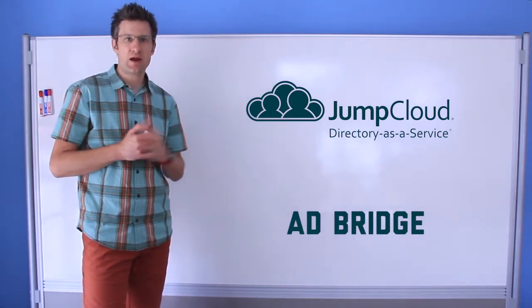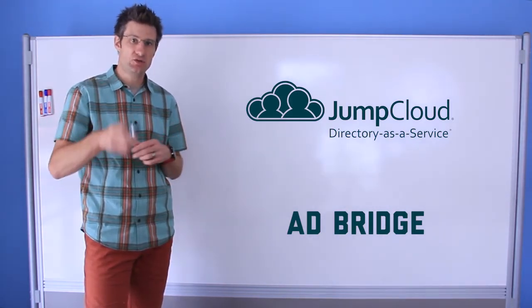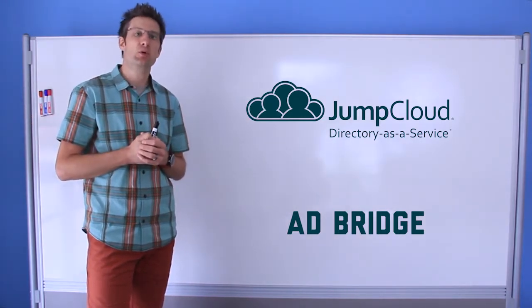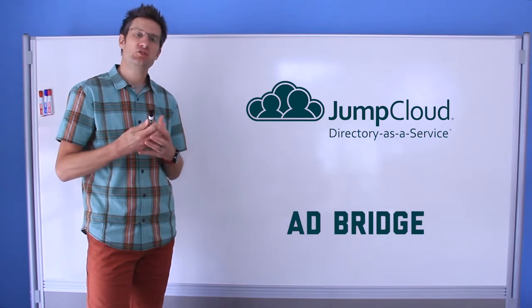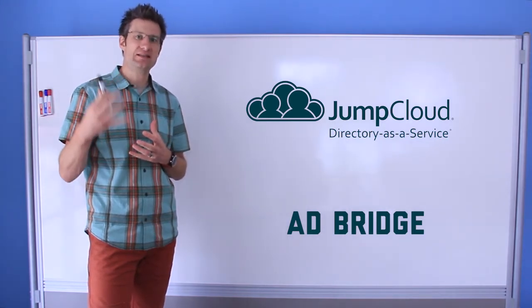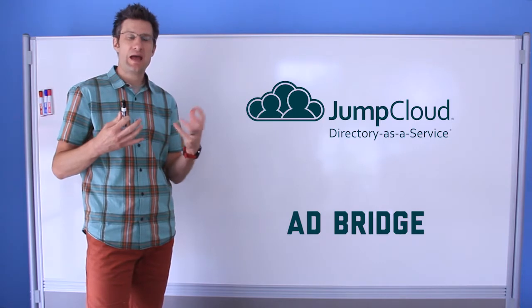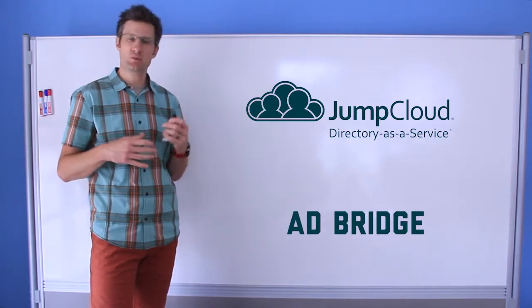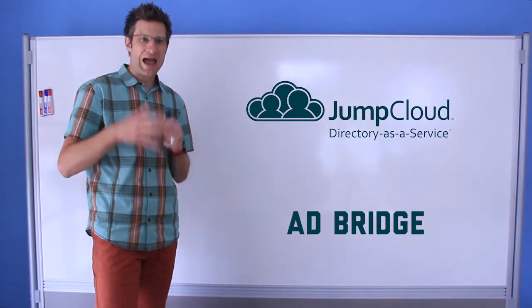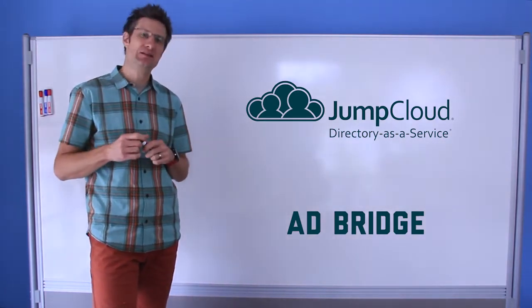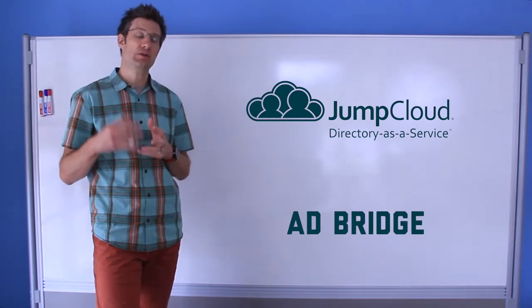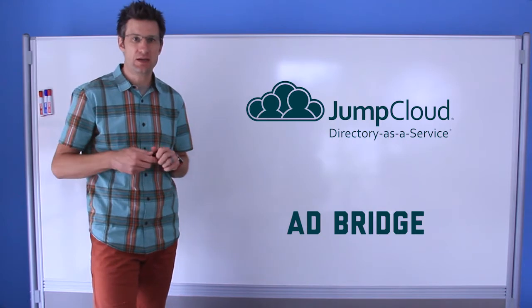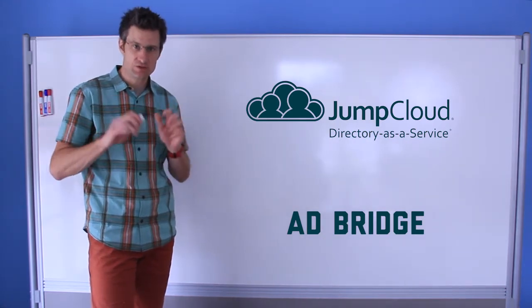As we've done in prior whiteboard sessions, I'm going to use my trusty marker and simplify what is frankly a very simple piece of software to connect active directory identities through JumpCloud out to cloud-based and other non-bound resources. When I say non-bound, I'm talking about things that are not connected to the active directory domain controller themselves, but still need governance with those active directory user identities.